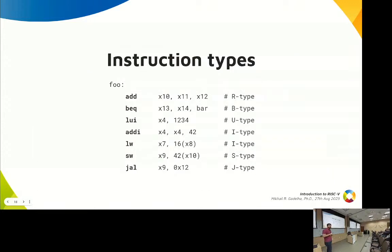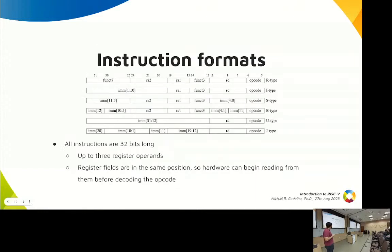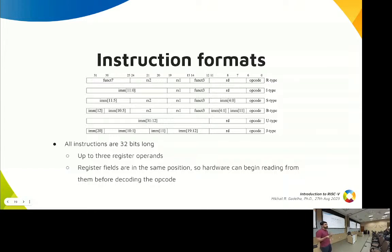All instructions are divided into six types: R, B, U, I, S, and J. The most important thing is that they all place registers in the same position within the instruction, so hardware can read the registers before decoding the instruction type. Instructions can reference up to three registers. Since this is a 32-bit architecture, all instructions are 32 bits long.